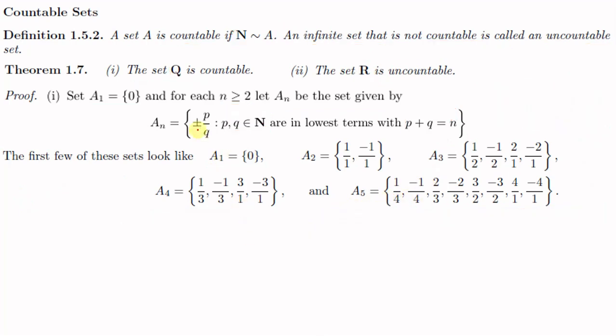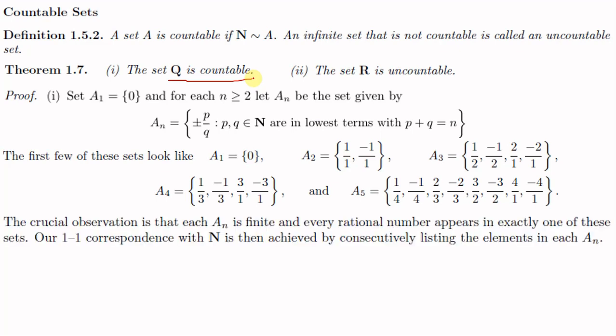To show that Q is countable, we show there exists a one-to-one correspondence between the set N of natural numbers and the set Q. We list the elements of N as 1, 2, 3, 4, 5, 6, 7, 8, etc. Then we list the elements of Q by first writing the elements of A₁, then A₂, then A₃, and so on.